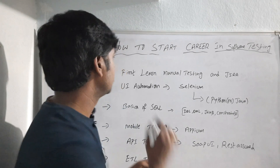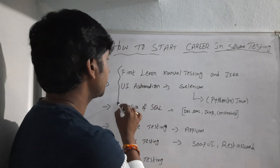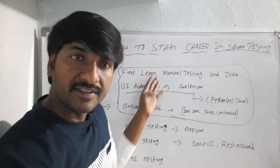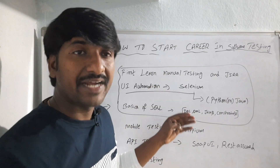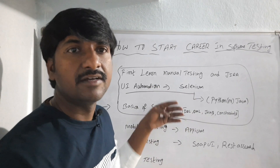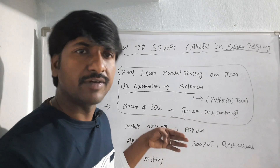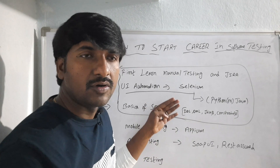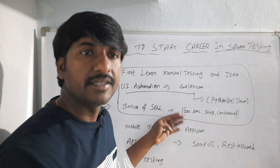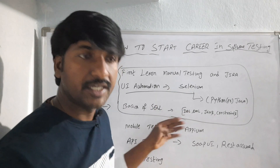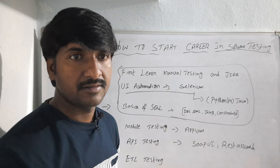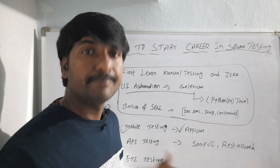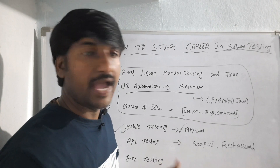Once you are comfortable with these concepts — manual testing, Selenium, and basic SQL — you can try to get a job with these skills. Do practice by taking a web application like Facebook, Gmail, or any e-commerce application like Flipkart or Amazon, and automate each and every component in that website. This way you will gain some professional experience and you will be a job-ready person.